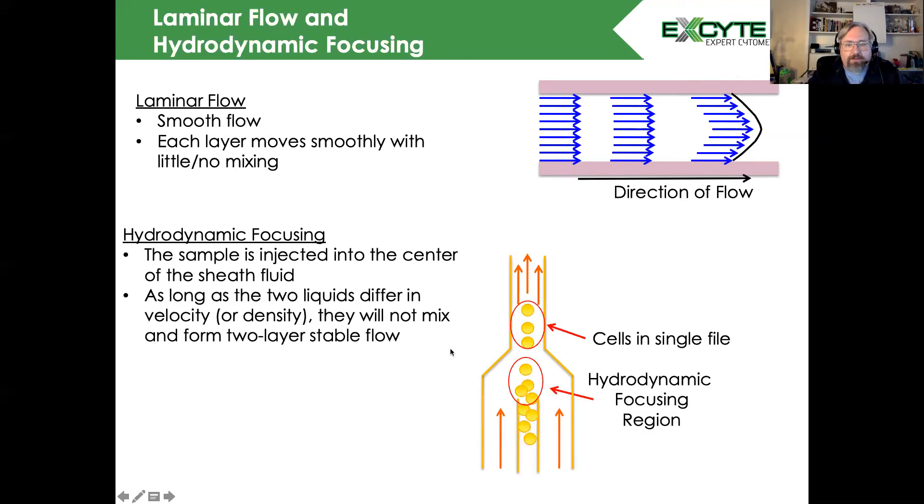Here is a typical flow cell. We have our sample being injected here. Our sheath fluid is running in this direction in red, and as the sample is injected, you'll see it's coming in as a blob. With hydrodynamic focusing, we force the cells along the velocity axis to pass single file by the laser intercept.